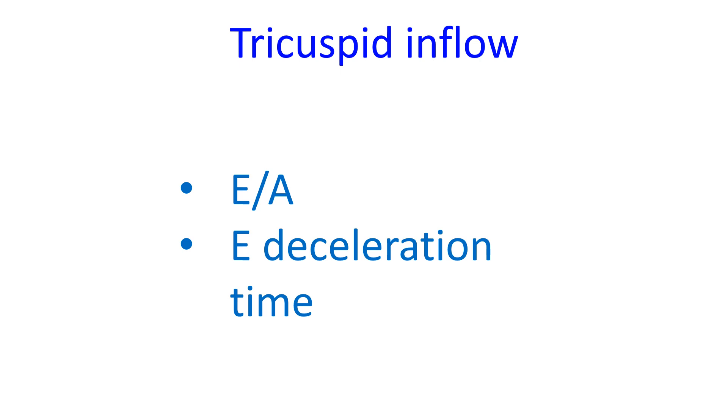Right ventricular isovolumic relaxation time can be calculated using tissue Doppler. E by E' ratio can also be calculated as on the left side.